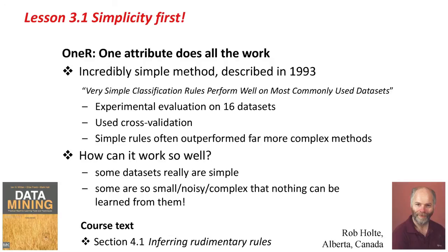So, 1R — one attribute does all the work. This is a very simple method of machine learning, described in 1993 in a paper called "Very Simple Classification Rules Perform Well on Most Commonly Used Data Sets" by Rob Holte, who lives in Canada. He did an experimental evaluation of 1R on 16 commonly used data sets using cross-validation, and found that the simple rules from 1R often outperformed far more complex methods. How can such a simple method work so well? Some datasets really are simple, and others are so small, noisy, or complex that you can't learn anything from them. So it's always worth trying the simplest things first. Section 4.1 of the course text talks about 1R. Now it's time for you to go and do the activity associated with this lesson.